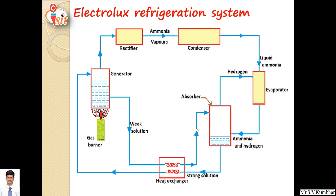Next is the Electrolux refrigeration system. This is a simple diagram of the Electrolux refrigeration system. In the generator, aqua ammonia solution is heated. Hydrogen gas is also used along with the aqua ammonia solution. Whenever waste heat energy is available, it is heated with the help of that waste heat energy.